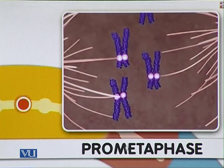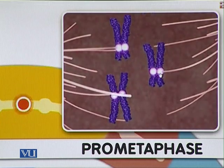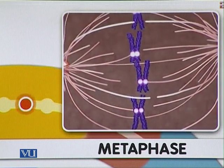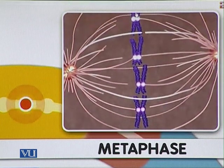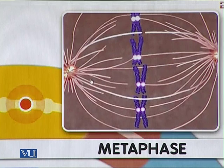Here you will see the microtubules are attaching to the kinetochore. The microtubules line up in metaphase at the metaphase plate. Here the cell pauses and checks whether all the kinetochores have been attached to the microtubules, and the cell confirms that all kinetochores are attached to spindle fibers emanating from two poles.